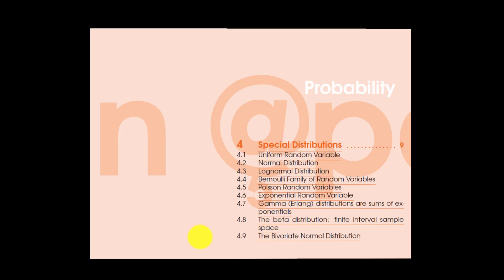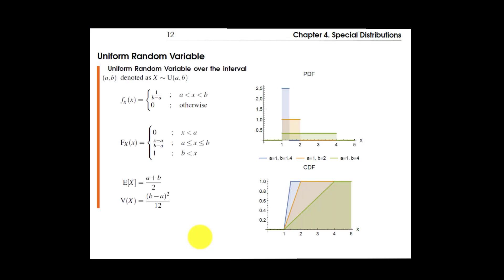Today we're going to start with Chapter 4, which is about special distributions — distributions that are very famous and very useful in engineering. We're going to start with the uniform distribution, which we have already talked about, and now we're going to formalize its definition.